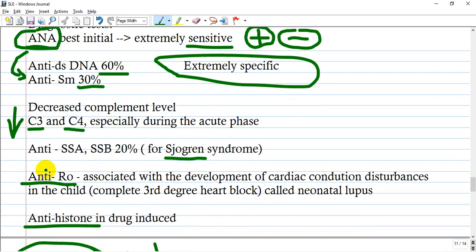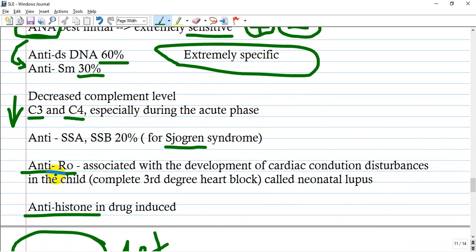Anti-SSA is for Sjogren syndrome but can also be found here. Anti-Ro is associated with the development of cardiac conduction disturbances in children, like complete third-degree heart block or neonatal lupus. Anti-histone antibodies are found in drug-induced lupus.